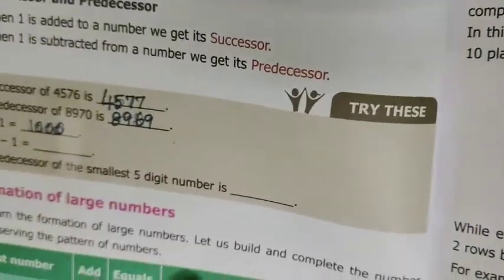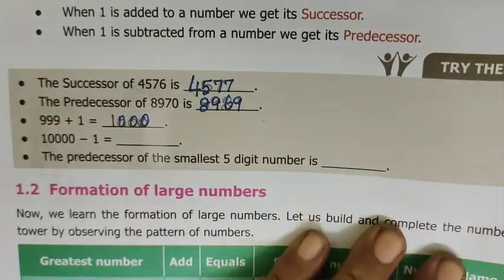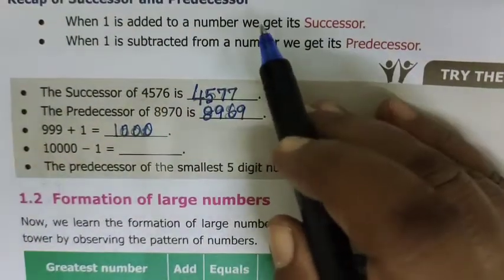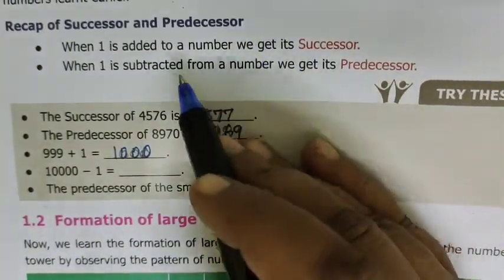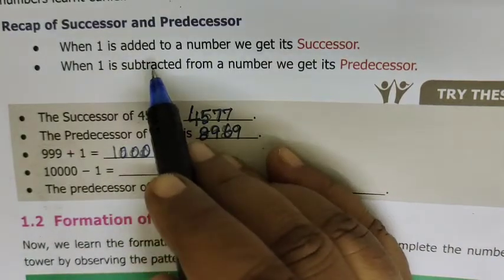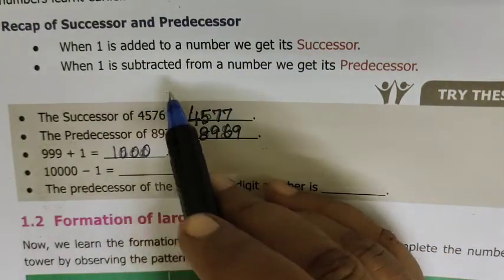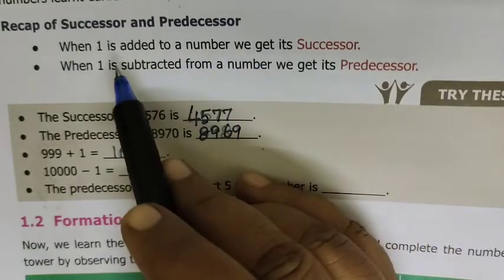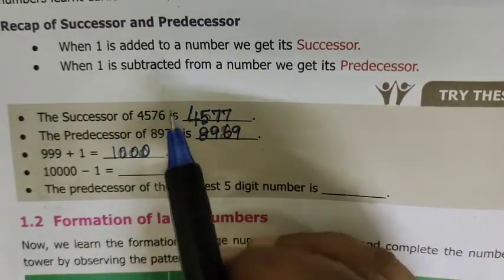Just a recap of successors and predecessors. Successor means you are adding one to the number. Predecessor means you are subtracting one from the number.